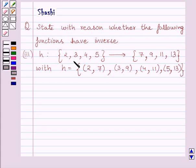H is a function from set {2, 3, 4, 5} to set {7, 9, 11, 13} with H equal to the set of ordered pairs {(2,7), (3,9), (4,11), (5,13)}.